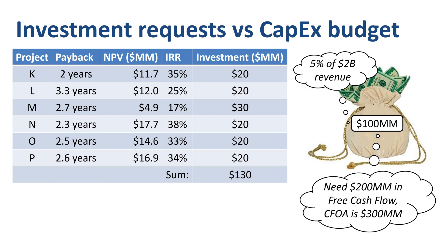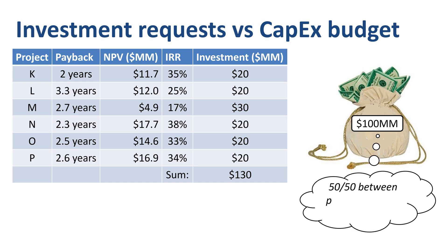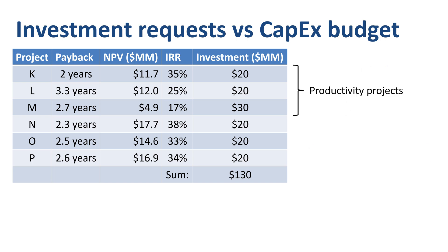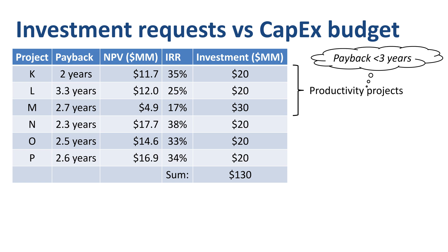On top of that, company leadership might specify that the CAPEX budget has to be split 50-50 between productivity projects and growth projects. Productivity meaning cost savings, primarily to increase the gross margin percentage. Growth projects meaning revenue growth, as the stock market places a huge premium on high-growth versus low-growth companies. The first three projects on our list are productivity projects. A lot of companies rank these based on the payback method with a cutoff — for example, selecting the most attractive projects as long as they have a payback within three years.